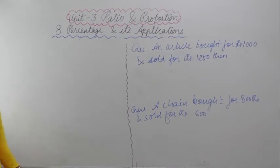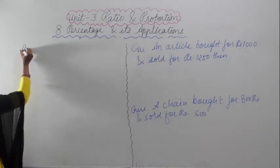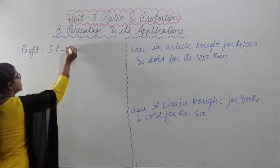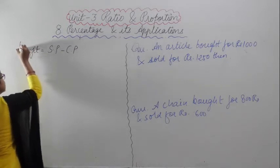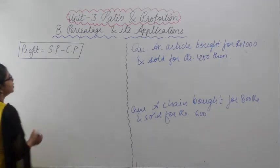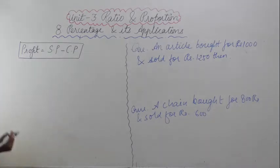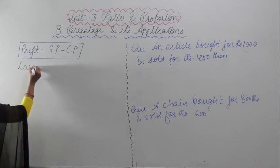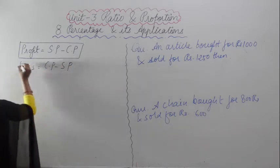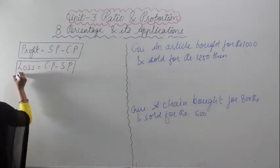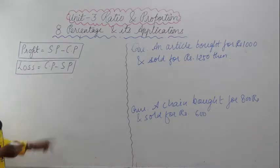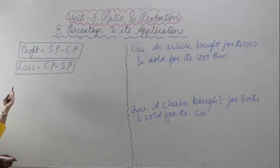So we are studying profit and loss conditions. The formula for profit is: Profit = Selling Price minus Cost Price, when selling price is greater than cost price. For loss: Loss = Cost Price minus Selling Price, when cost price is greater than selling price.